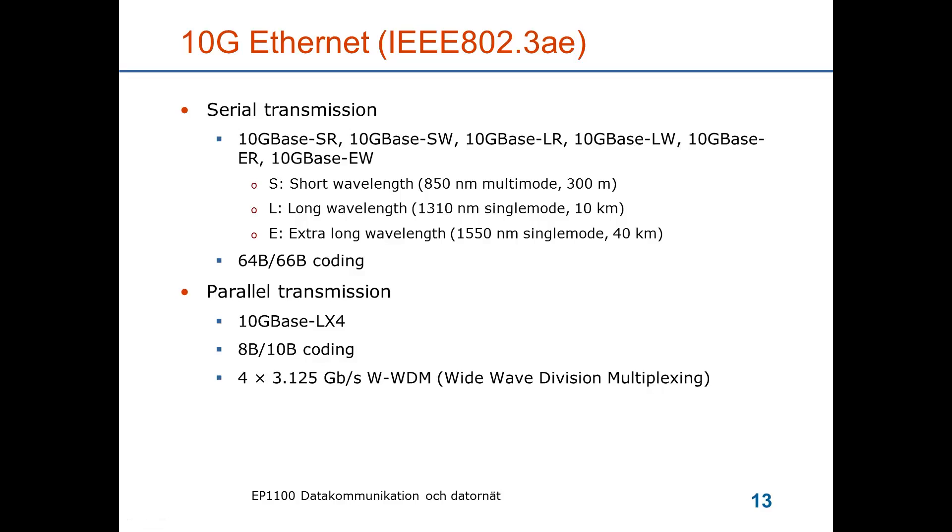The most recent standard is the 10 gigabit per second Ethernet in standard 3AE. It offers serial transmission over optical fiber both in multi-mode and single mode with distances up to 40 kilometers. It uses a block coding of 64 bits that are mapped to 66 bits for the channel coding. And it offers a mode of parallel transmission also which uses 8-bit 10-bit coding. It uses 4 wavelength channels, 4 optical channels of different wavelengths, each one modulated at the rate of 3.1 gigabits per second.